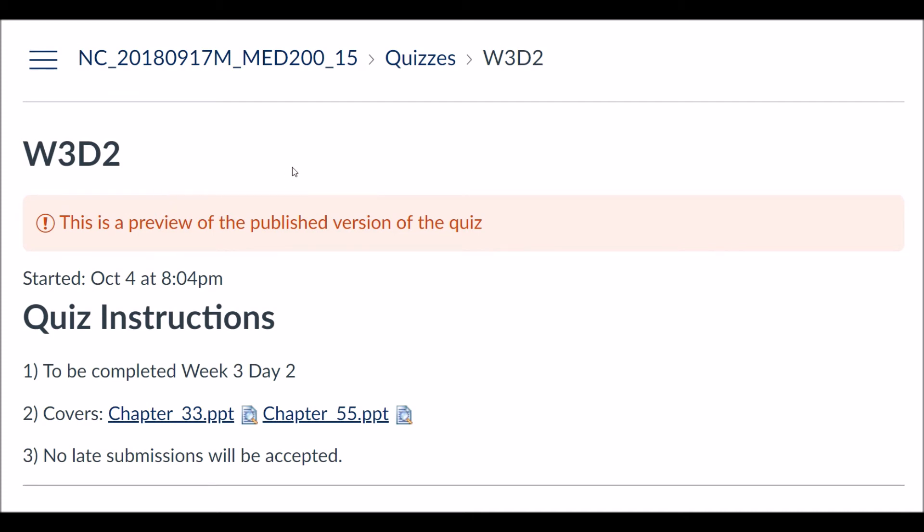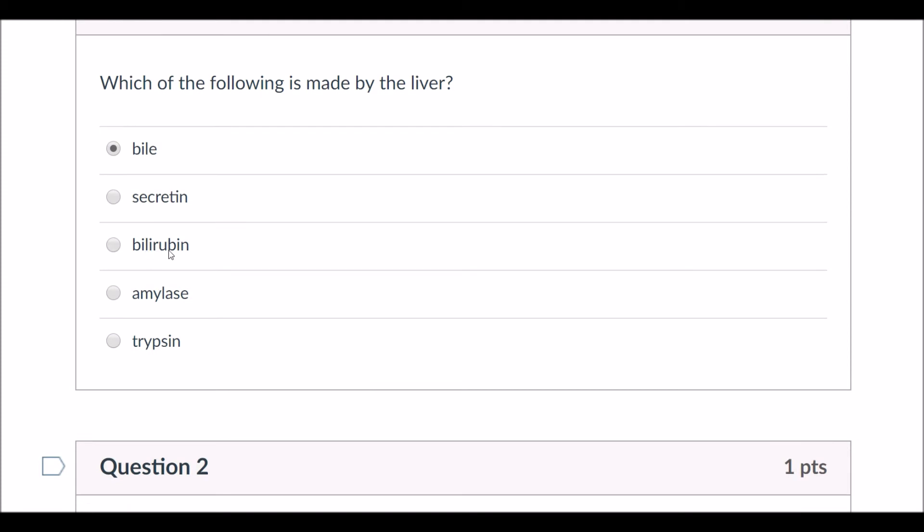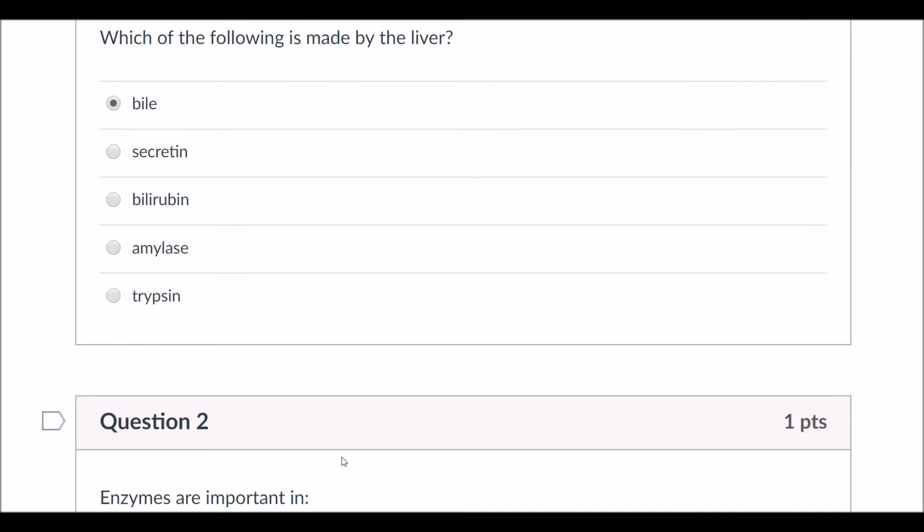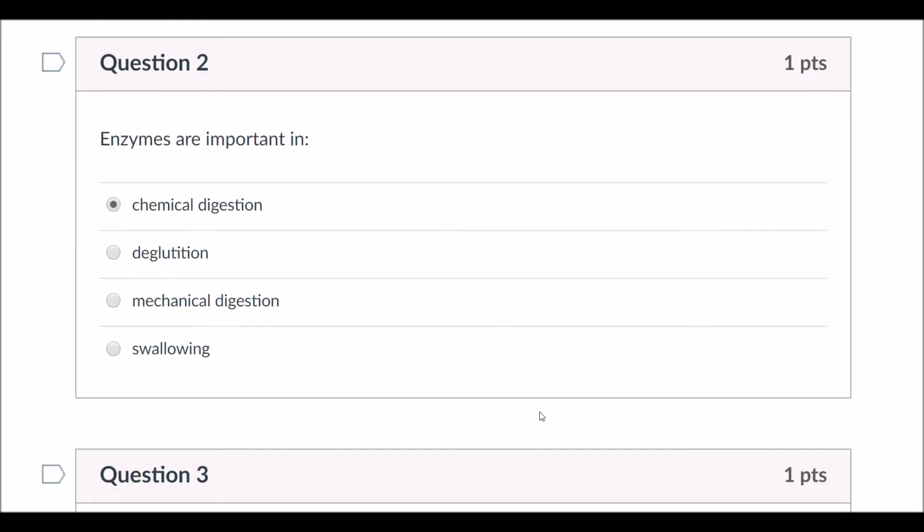This is week three day two. It comes from a question bank, so you might have some of these exact questions. Which of the following is made by the liver? Bile secretion, bilirubin, amylase, trypsin. Amylase, you agree? That's in saliva. That's in the pancreas. Yeah, that's the one they want. So they want bile. That's stored in the gallbladder. Trypsin, that's from the pancreas. Enzymes are important in...